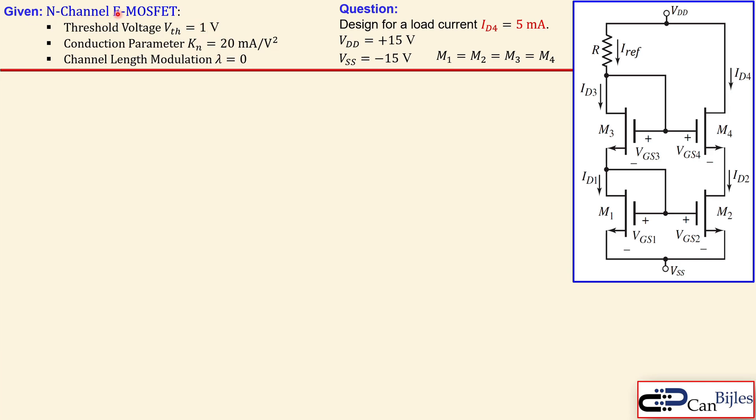We consider the N-channel enhancement type MOSFET in this design. We need to design for the load current ID4, which is shown here, of 5 milliamps. So let's see how we can design this circuit. First, we start with the calculations.